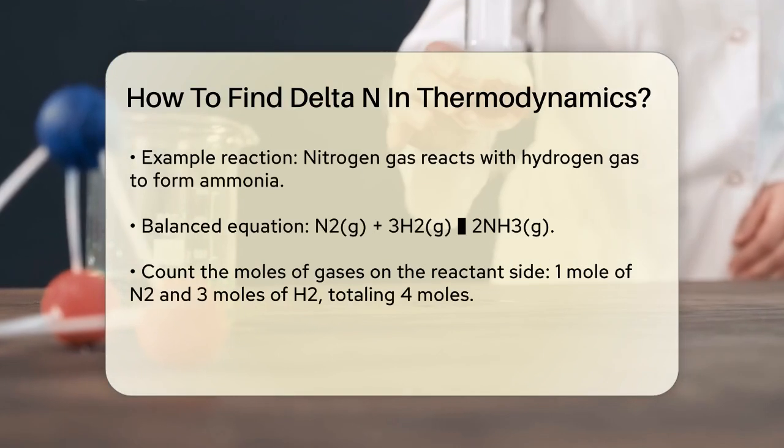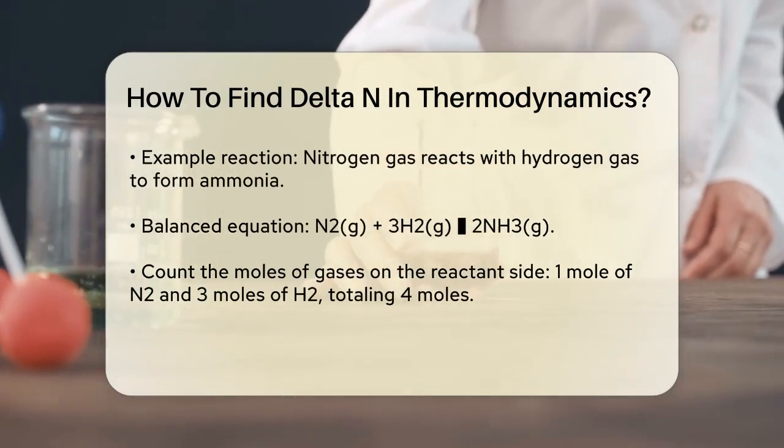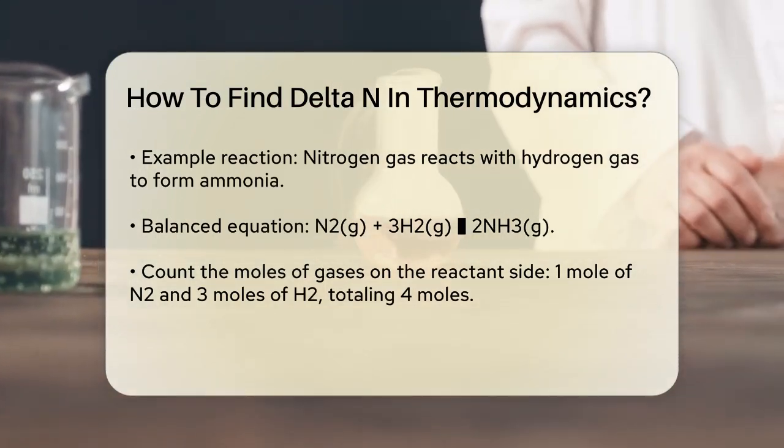To find delta N, you start by writing down the balanced chemical equation for the reaction. For example, let's consider the reaction where nitrogen gas reacts with hydrogen gas to form ammonia.